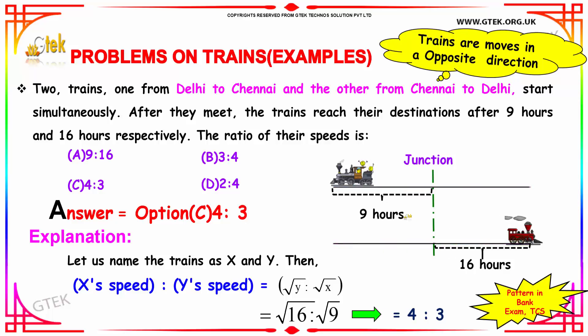So X speed and Y speed is calculated based on the timing. Root of y to root of x, that's 16 to 9. The time taken by Y train and time taken by the X train. So obviously, root 16 to root 9, that's 4 to 3.